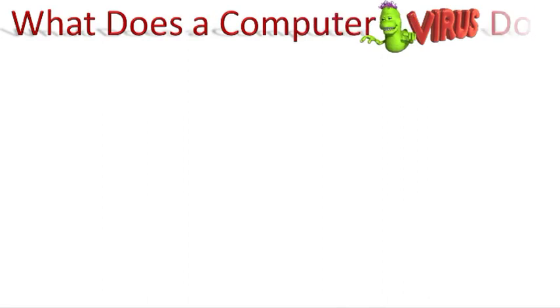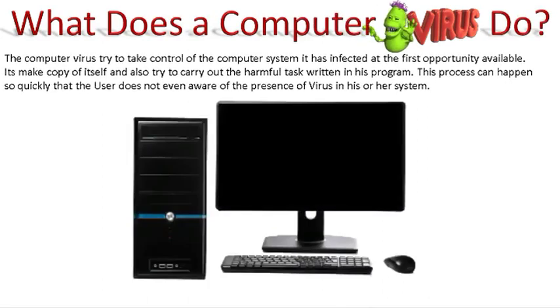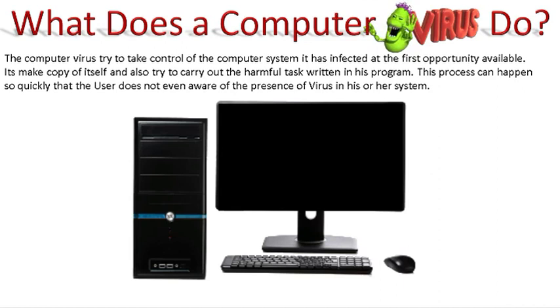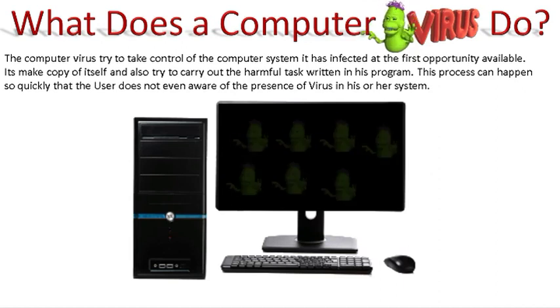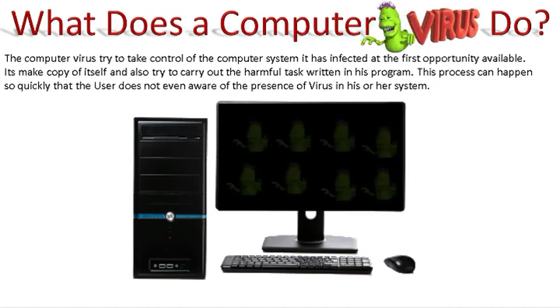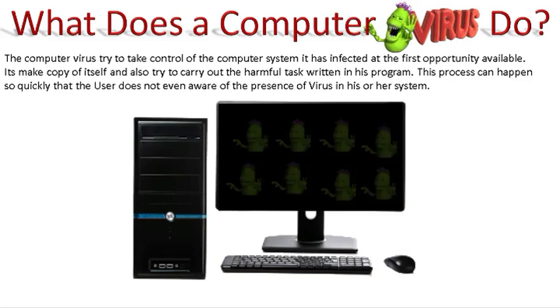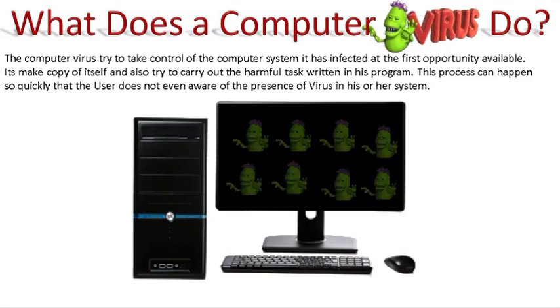So what does a computer virus do? The computer virus tries to take control of the computer system it has infected at the first opportunity available. It may copy itself and also try to carry out the harmful tasks written in its program. This process can happen so quickly that the user is not even aware of the virus present in their system.